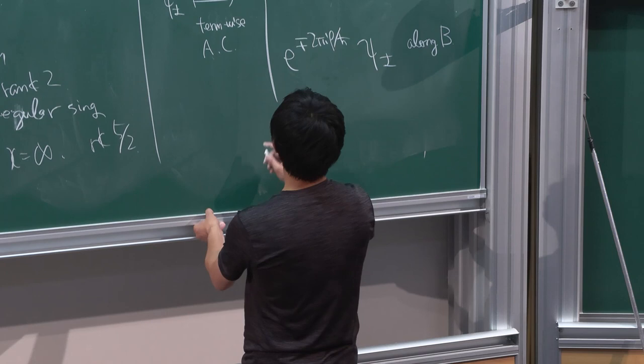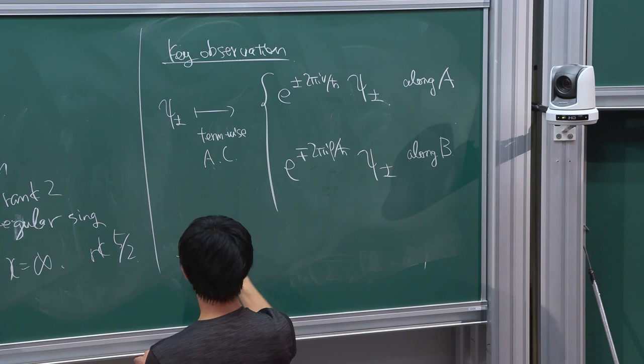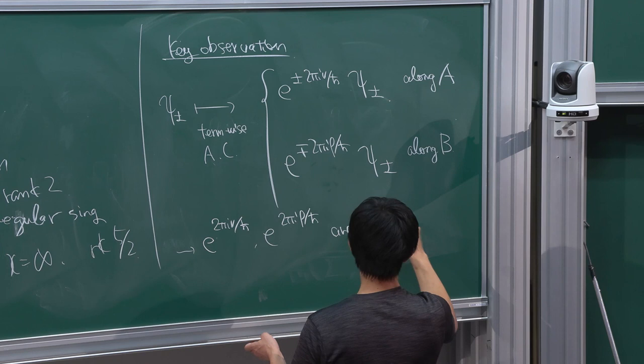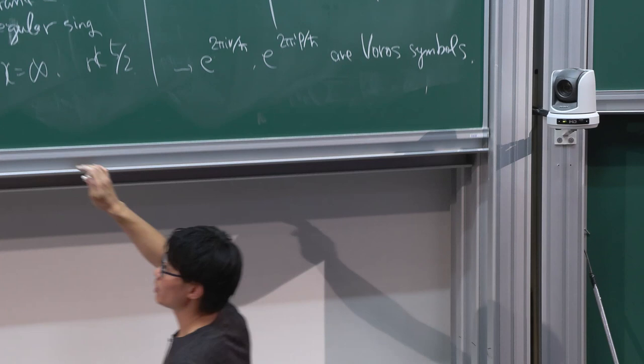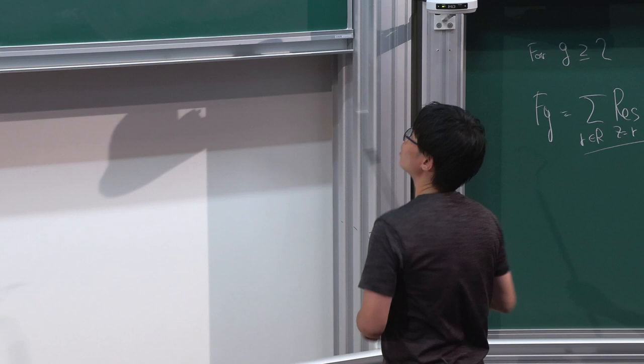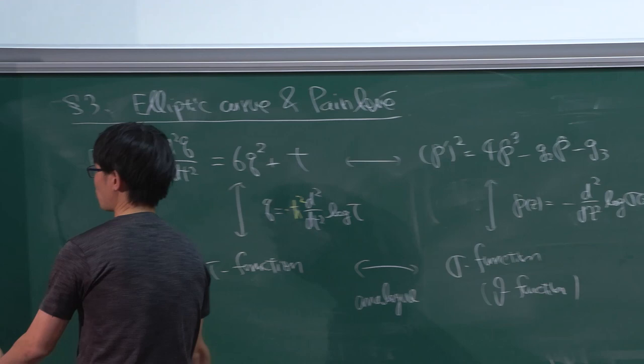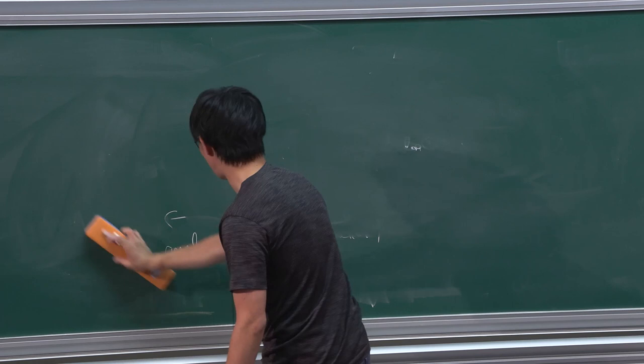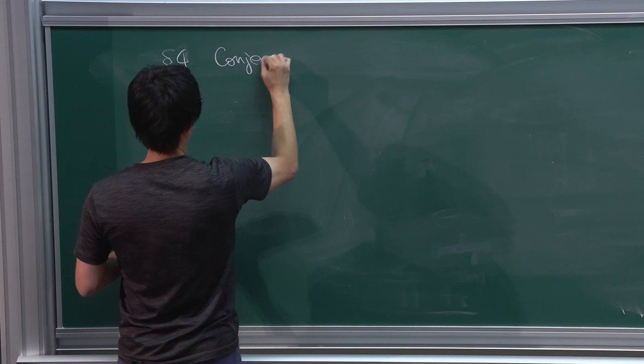This explains the monodromy property of topological recursion quantization plus the discrete Fourier transform. From this viewpoint, exp(2πi·nu) and exp(2πi·rho/h-bar) are related to Bohr symbols — obtained from the regularized holonomy or monodromy. From this observation, in the same 2019 paper, I discussed a conjecture on Borel summability of the topological recursion partition function.